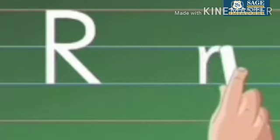Now small r. Start from the middle, draw a standing line to the bottom. Again go to the middle and draw a small curl towards the right.